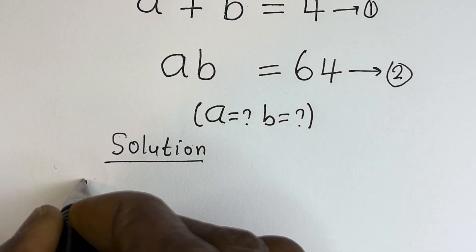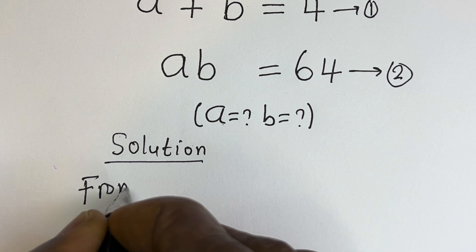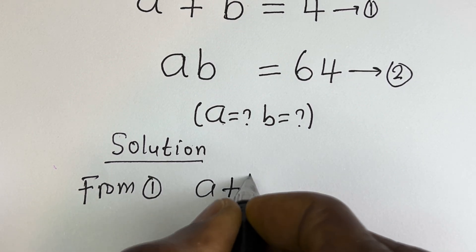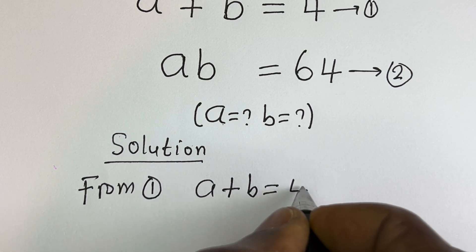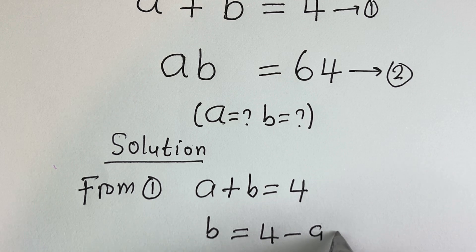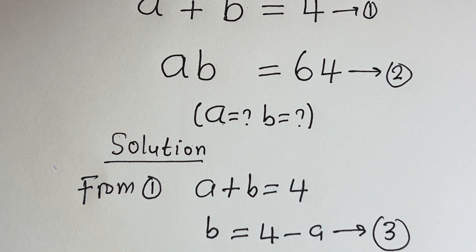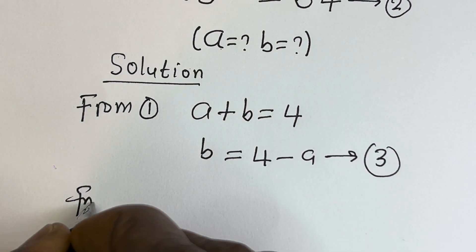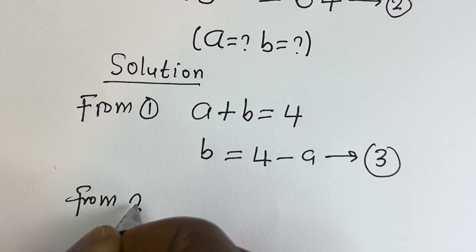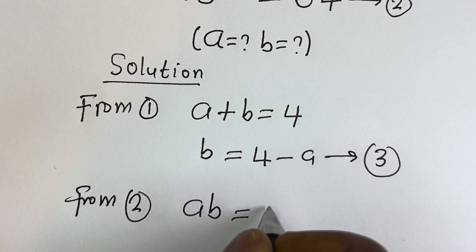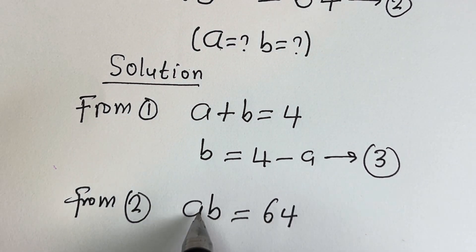From equation 1, a plus b is equal to 4 — let's call this equation 1. And a times b is equal to 64 — let's call this equation 2. From equation 1, b is equal to 4 minus a; we can call this equation 3. Then from equation 2, a times b equals 64 — let's substitute for b.